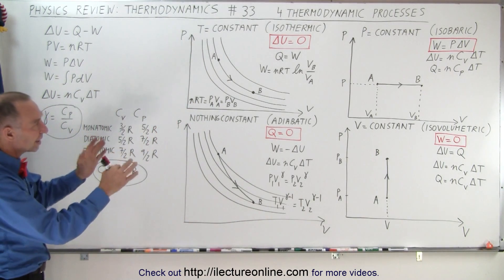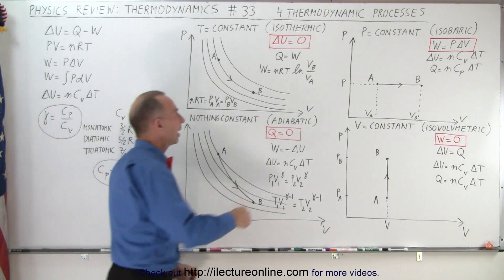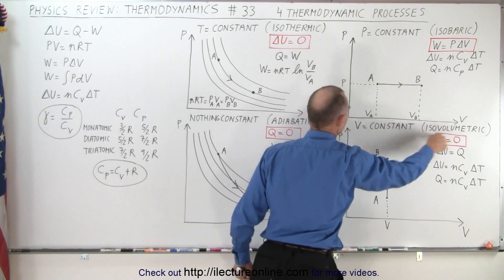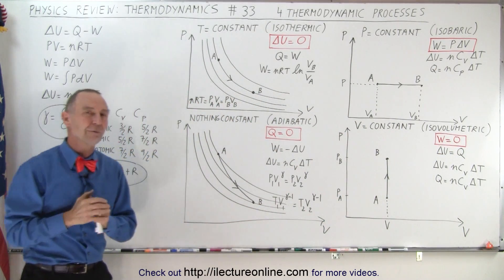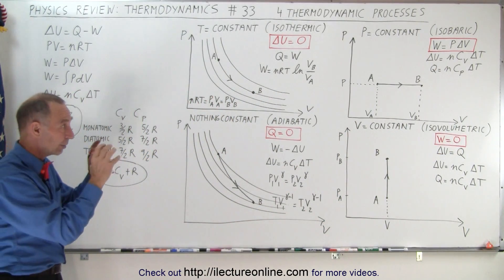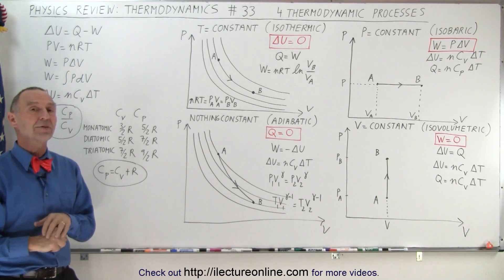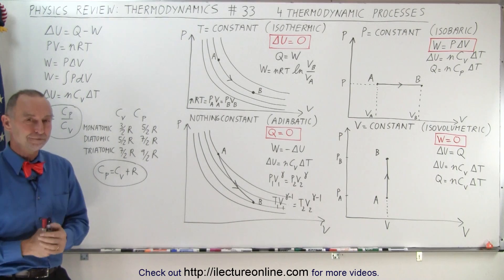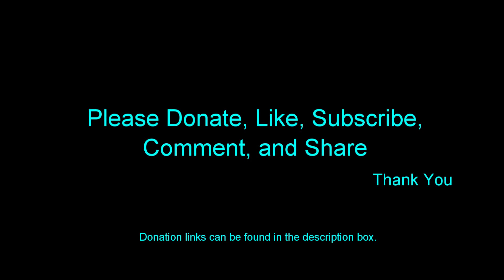There you can see the relationship between the four thermodynamic processes, and what's circled in the red box is the key to each of the four processes. Try to memorize what's on the board — and that is how it's done.